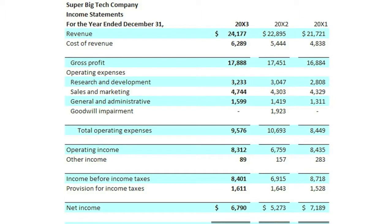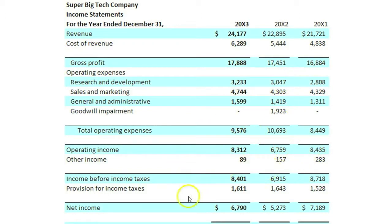Please stop and take a moment to perform a horizontal scan of each of SBTC's accounts on its comparative income statement to see what positive, negative, and unusual patterns you can recognize.